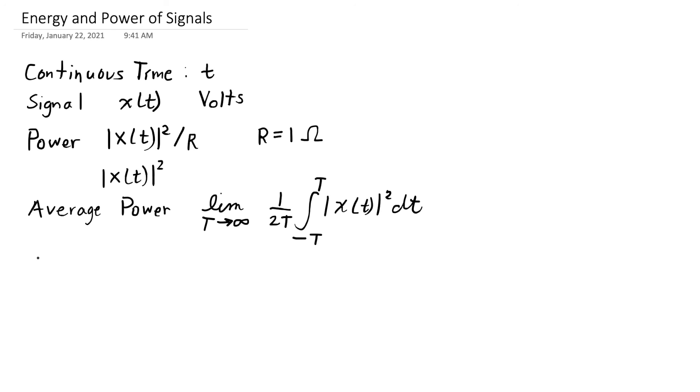Now we also talk about energy. The energy of a continuous time signal is typically referred to as E, and it's just going to be this integral over all time of the instantaneous power of the signal.